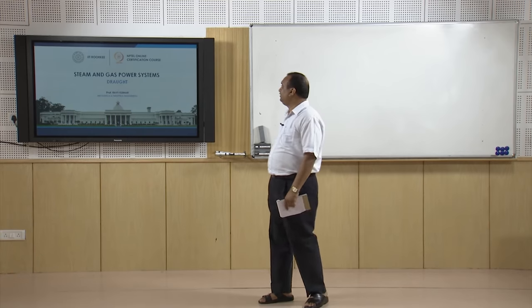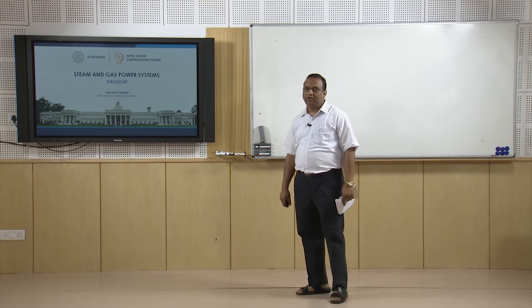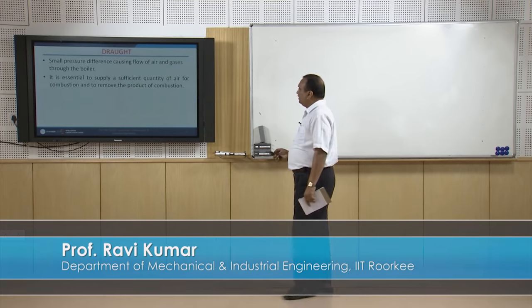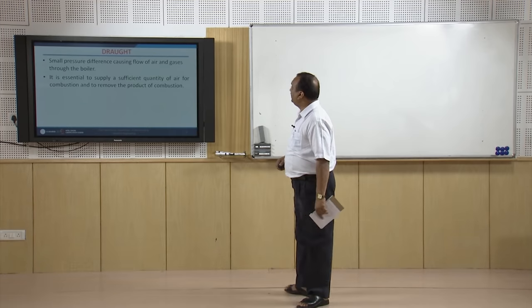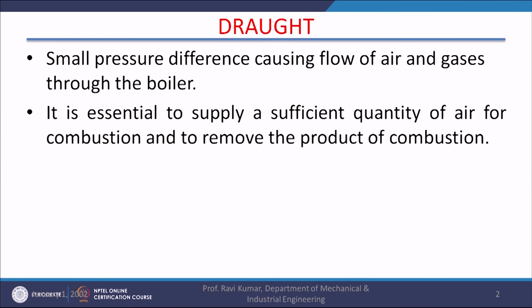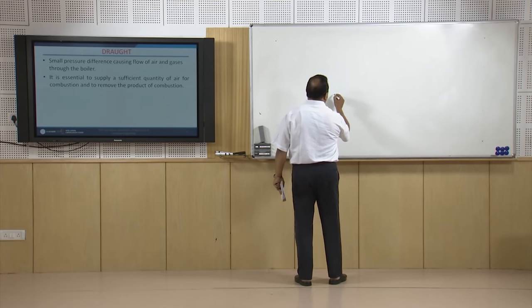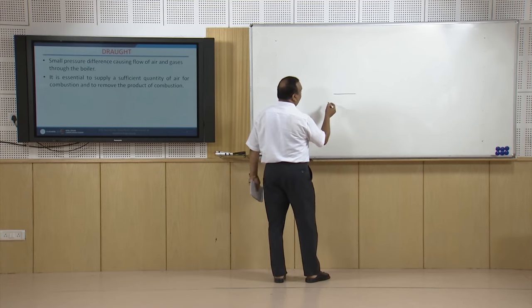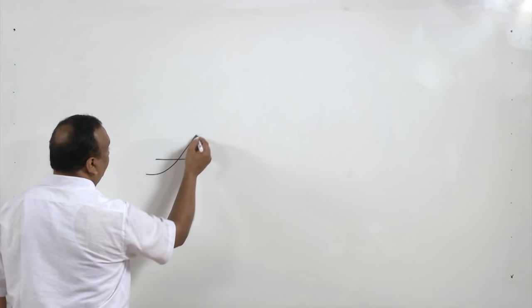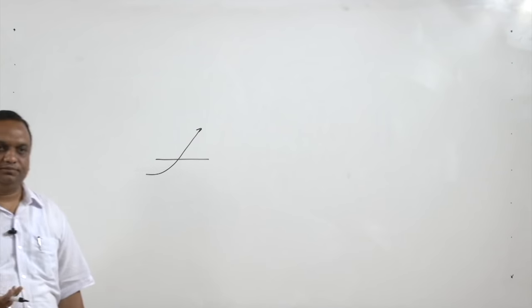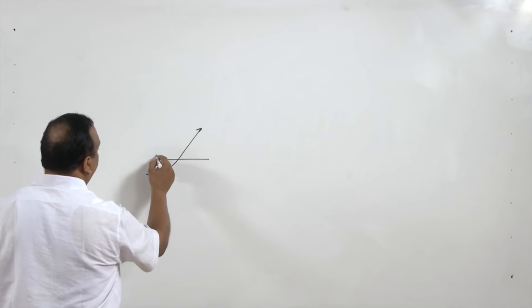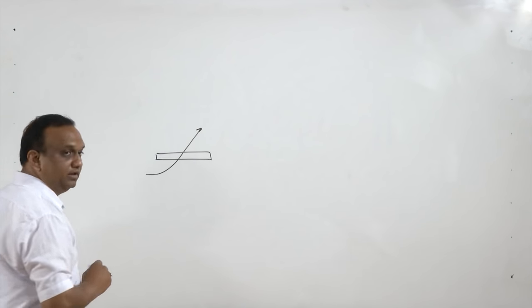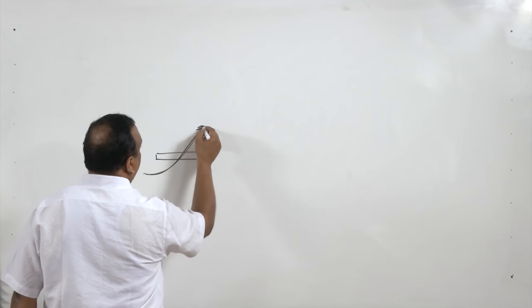Welcome to this course on Steam and Gas Power Systems. Today we will discuss draft. Draft is a small pressure difference causing flow of air and gases through the boiler. It is essential to supply sufficient quantity of air through the grate because fuel is burned there, and the designer must ensure sufficient air is available; otherwise the fuel will not burn and boiler efficiency will go down. To ensure complete combustion of fuel in the grate, air circulation must be maintained.